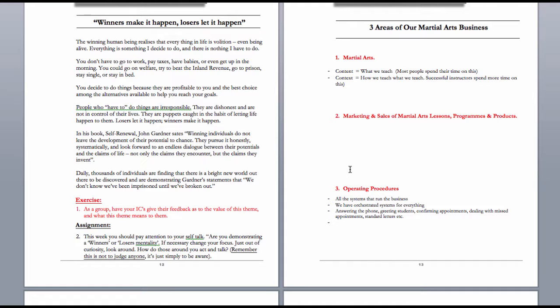Now you'll see in front of you right here, there's three areas of martial arts business and you'll see areas in red which are basically things that need to be answered. So for example, not only is it just about learning, reading and writing, there are physical exercises that you can get your students to do. For example, exercise one is you get your instructor candidates to give their feedback as to the values of this theme and what this theme means to them. So you're getting them to interact with each other.